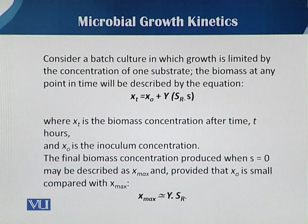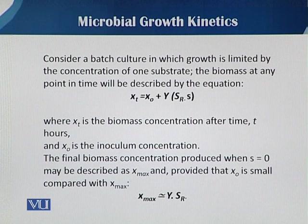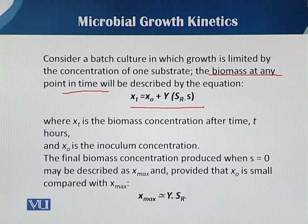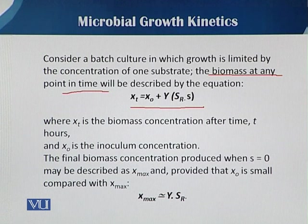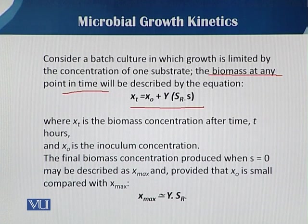When we talk about fed batch with variable volume, consider a batch culture in which growth is limited by the concentration of one substrate, which we call the limiting substrate. The biomass at any point with respect to time can be described by this equation: Xt. The biomass concentration at time t — X naught is the amount of biomass added as inoculum, and Y is the yield in result of fermentation, either in terms of biomass or product. Then SR minus S.